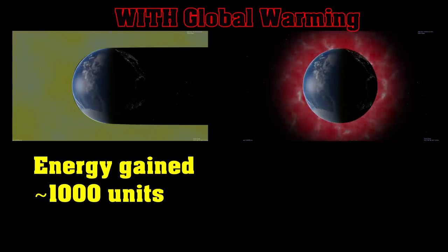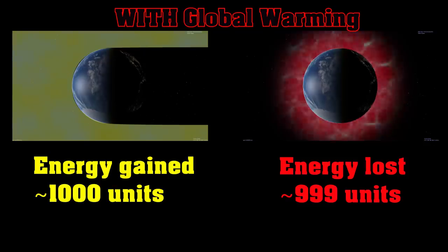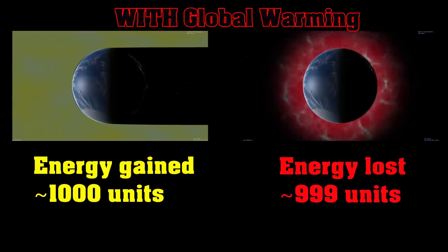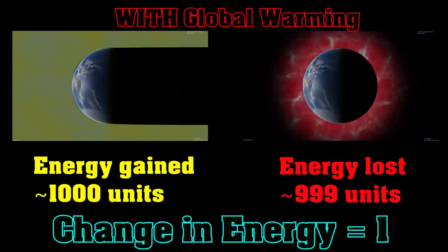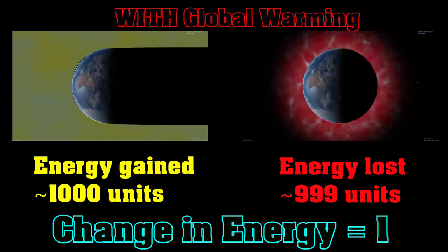Now, with global warming, it absorbs about the same amount of energy, but it radiates about one part in a thousand less into space, with carbon dioxide being the main contributor there. Yes, that's the entirety of global warming, is one part in a thousand extra energy harvested from the sun.